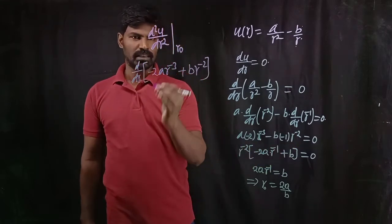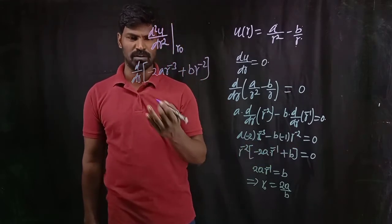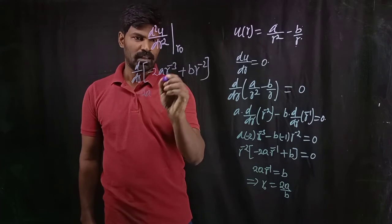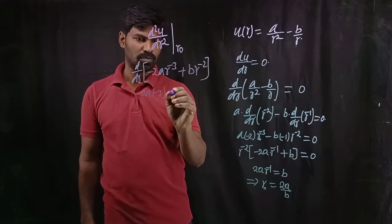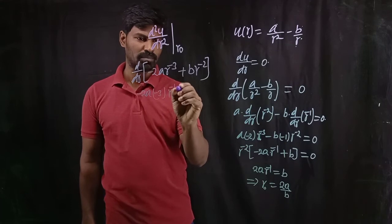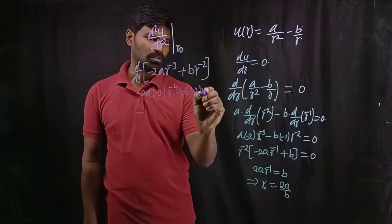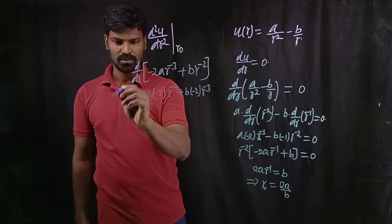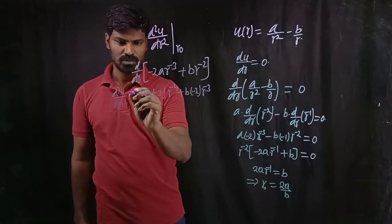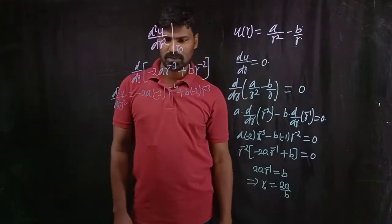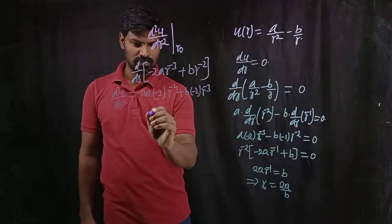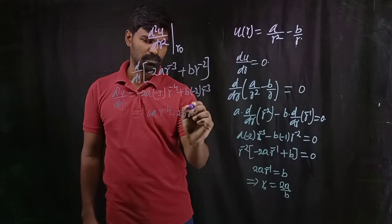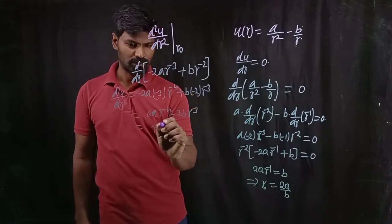Taking this and differentiating one more time — here it is not zero, I should check whether it corresponds to a maximum or minimum. So minus 2A is constant; applying the power rule to R to the power minus 3 gives minus 3, giving exponent minus 4. Plus B into minus 2 into R to the power minus 3. This gives d²U/dR² equal to 6A into R to the power minus 4 minus 2B into R to the power minus 3.